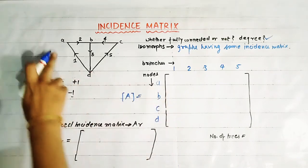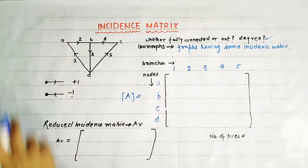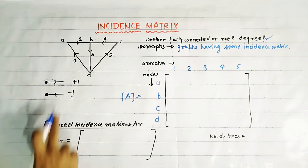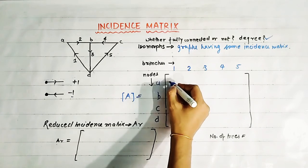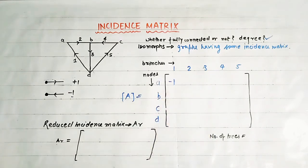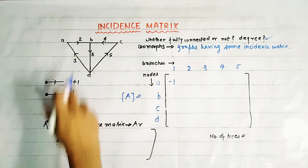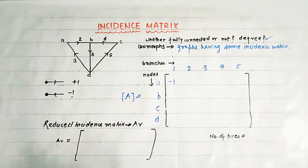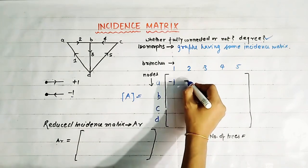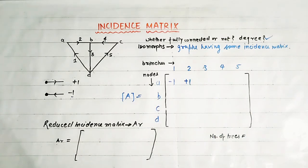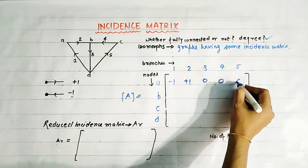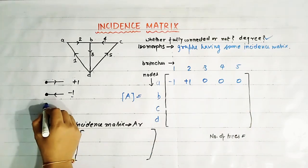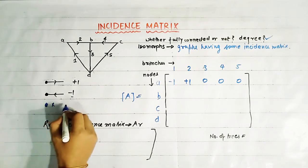At node A, branches one and two are connected. Branch one is entering the node, so we write minus one. Branch two is leaving the node, so we write plus one. All remaining branches are not connected to node A, so we write zero for those.